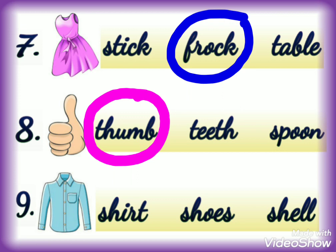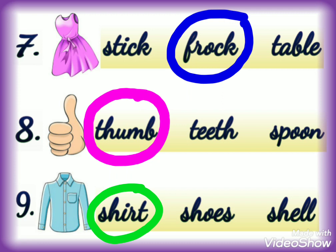Number 9 — this is the picture of shirt. We'll go to the options. First option is S-H-I-R-T, shirt — yes, this is the correct answer, so we will circle this word. The next option is S-H-O-E-S, shoes — this is not the right answer. Next option is S-H-E-L-L, shell — this is also not the correct answer.